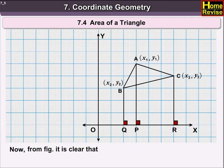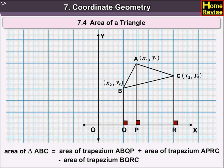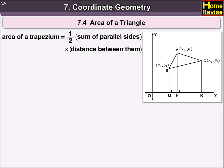Now, from the figure, it is clear that area of triangle ABC is equal to area of trapezium ABQP plus area of trapezium APRC minus area of trapezium BQRC. You also know that the area of a trapezium is equal to half into sum of parallel sides into distance between them.